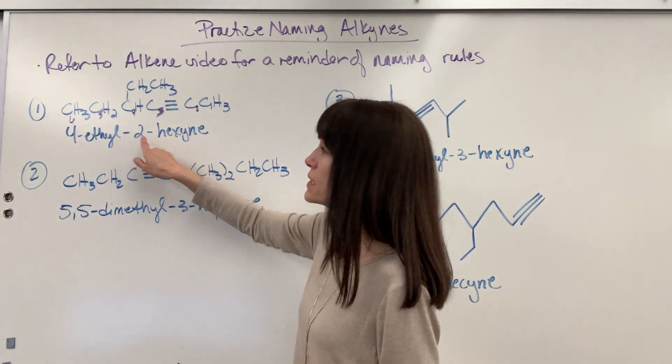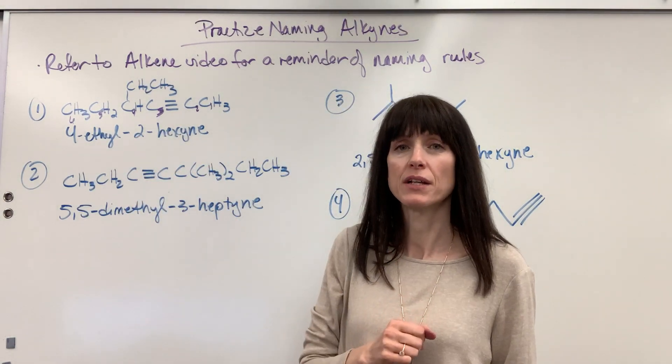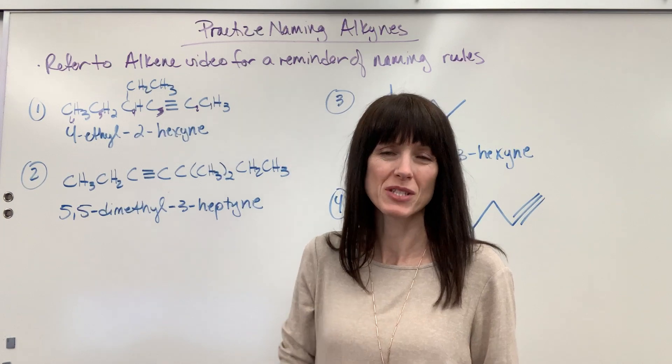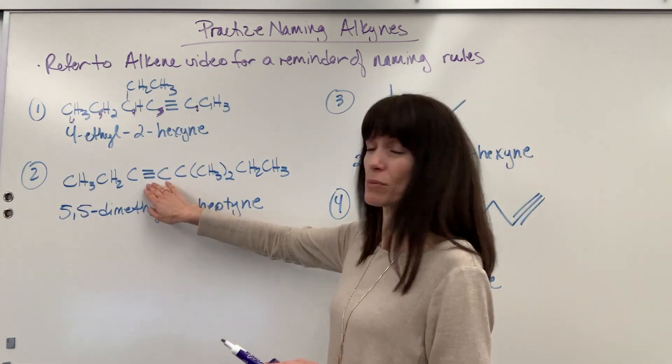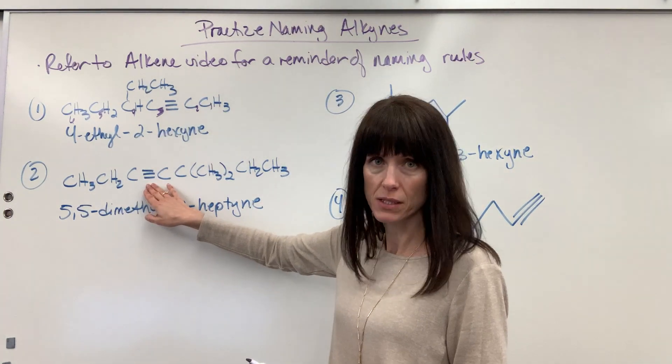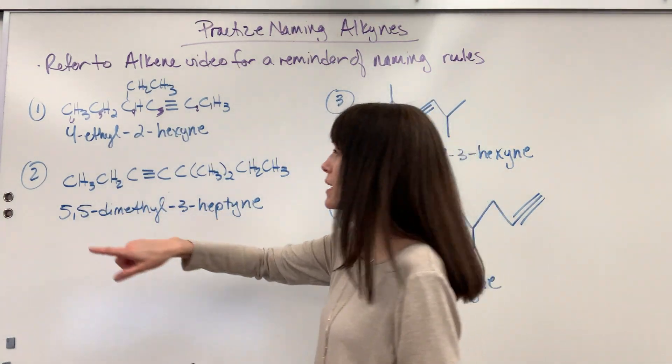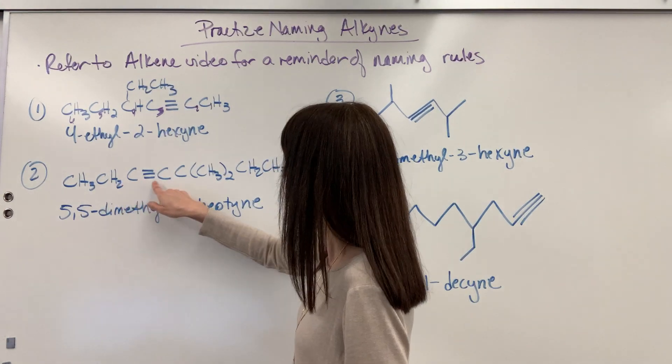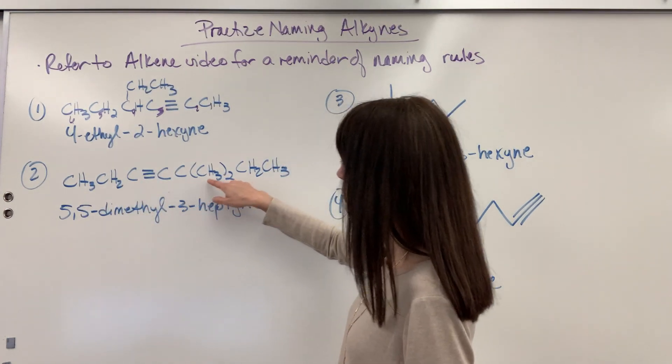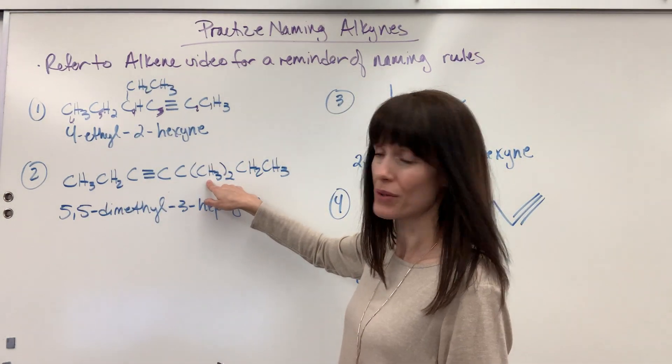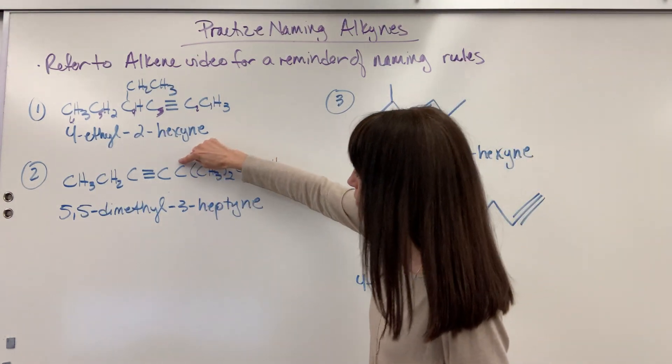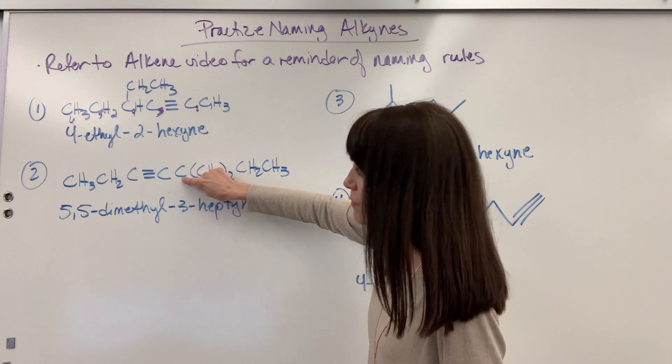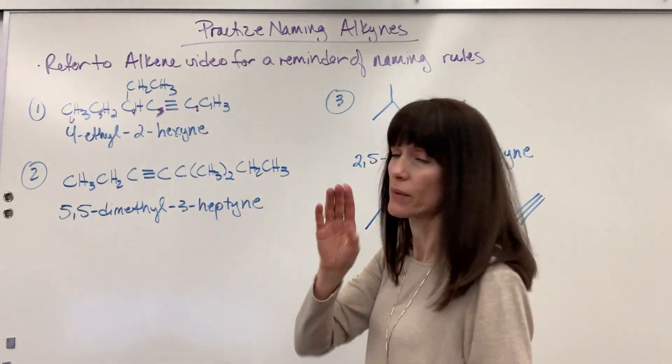A little reminder, we put dashes in between numbers and letters, and if you have two numbers together, multiple numbers together, you put commas. Let's look at number two. Okay, I see my triple bond. We want to give that the smallest number possible. I'm going to start counting on the left-hand side. One, two, three, four, five. Oh, look, I have two methyl groups. That condensed way of writing the CH3-2, it means I have a methyl group up here and a methyl group down there. So I'm going to start over again.